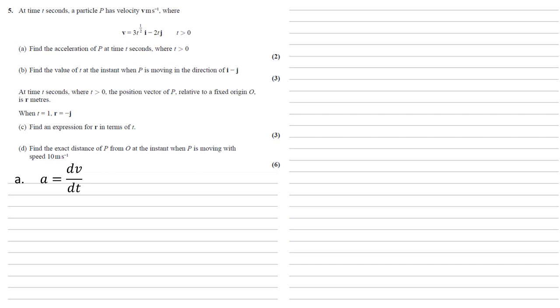So 3t to the half, bringing the half down, taking one off the power, we've got a half times by that 3, and the power becomes minus a half. And then 2t, the differential of that just becomes 2. So simplifying this, we get 3 over 2 times t to the power of minus a half i minus 2j.